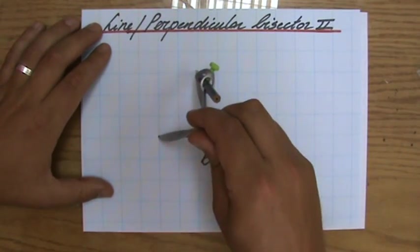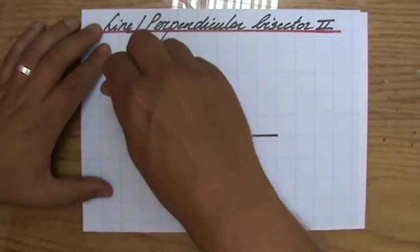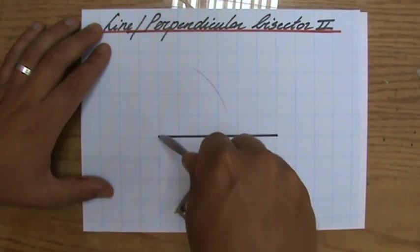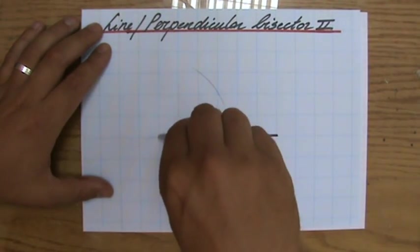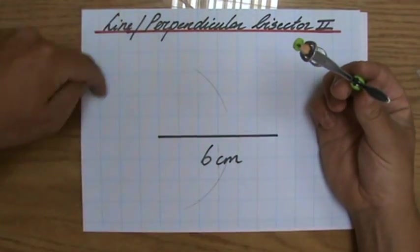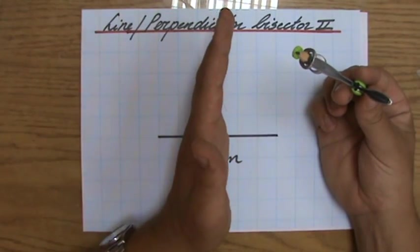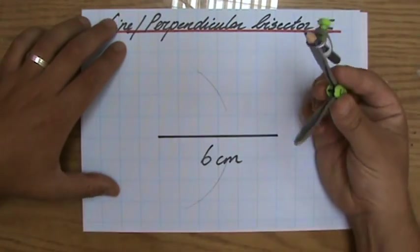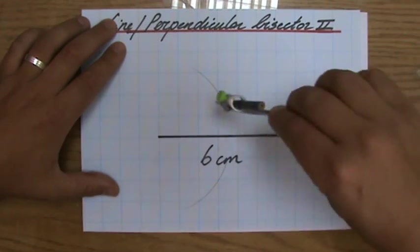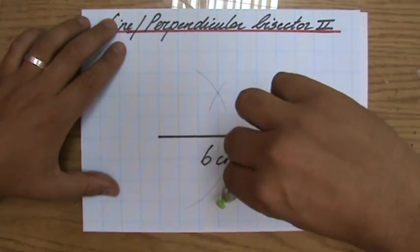Then I draw the arc above my line, the one I'm trying to bisect, and below. And I don't have to draw everything because I know my line bisector is going to be somewhere here. And I do the same on the other side, one, two.